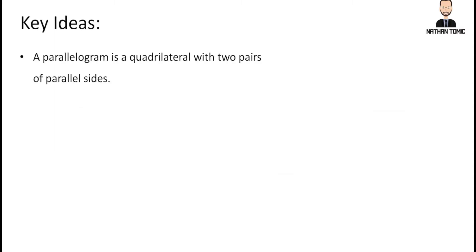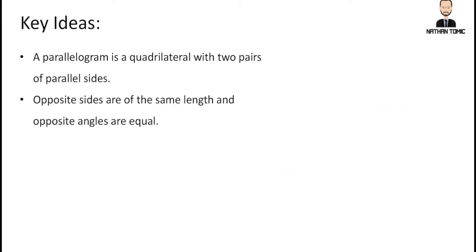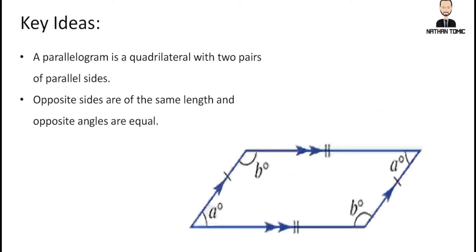Our key ideas today: a parallelogram is a quadrilateral with two pairs of parallel sides. Quadrilateral just means a shape with four straight sides. The opposite sides are of the same length, and we can see that by the little markings on the diagram. Parallel lines means they run equal distance from each other the whole time — they are opposite to each other.